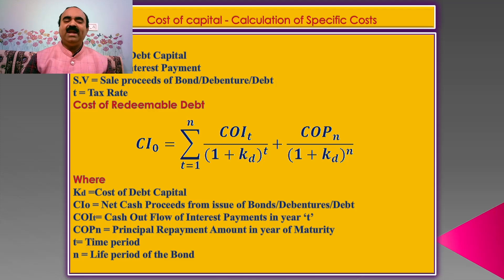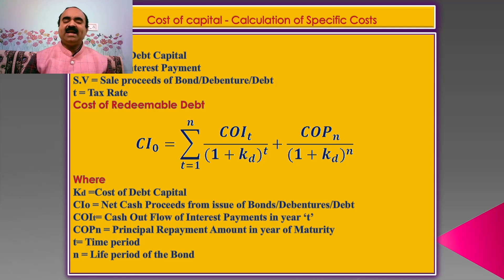Cost of redeemable debt can be calculated by using the equation: CI₀ = Σ(t=1 to N) [COIₜ / (1 + KD)^t] + COP_N / (1 + KD)^N, where KD is cost of debt capital, CI₀ is net cash proceeds from issue of bonds or debentures or debt, COIₜ is cash outflow of interest payments in year t, COP_N is principal repayment amount in year of maturity, t is time period, and N is life period of the bond.